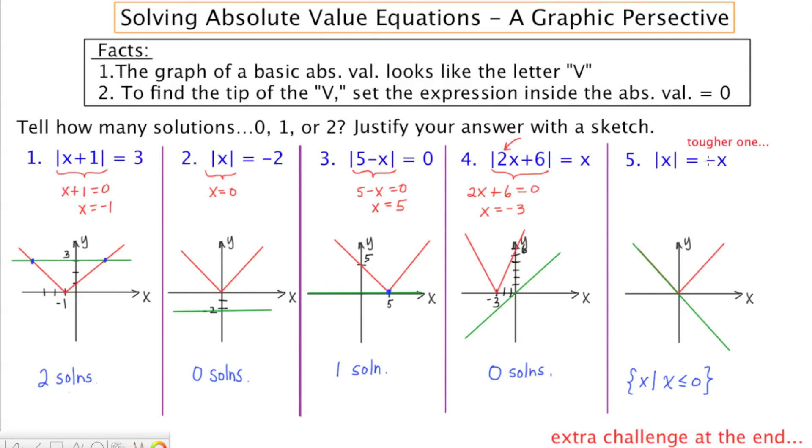I want the left-hand side to be a V, so that's going to be something in absolute value. And I want the right-hand side to be a sloped line. How are you going to take the V and the sloped line and make it so that there's only one solution? That's what I'd like you to think about for tomorrow.